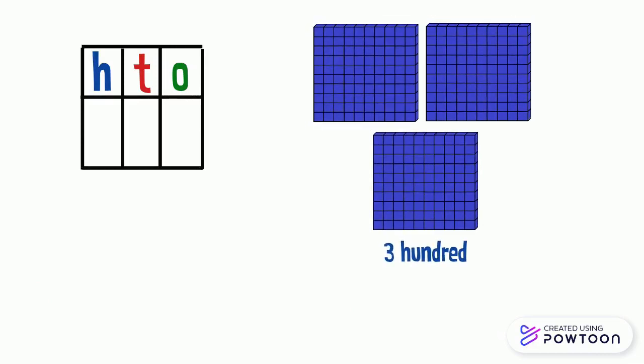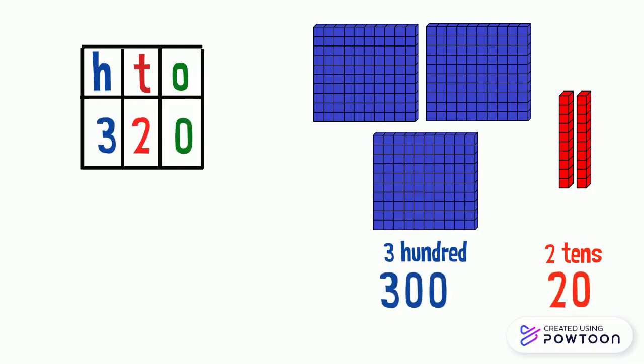Three hundreds and two tens. This number is 320. Three blocks of 100 equals 300. Two tens equals 20. So the expanded form of the number 320 is 300 plus 20.